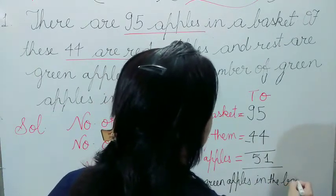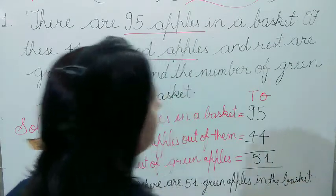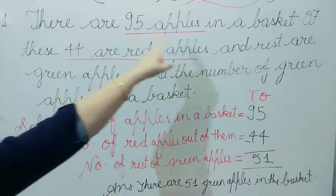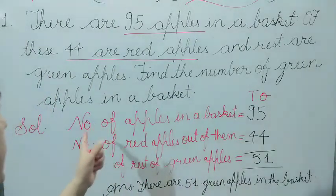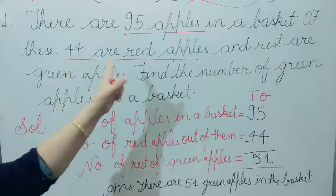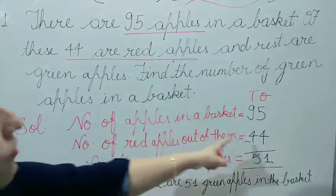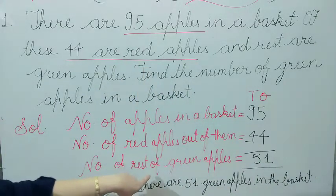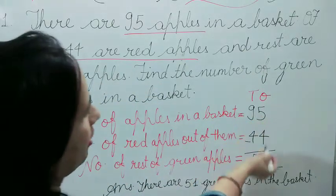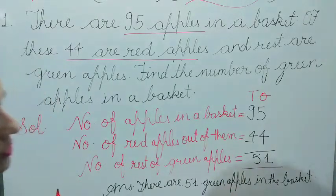So this is our answer and it is easy for you to understand how to solve it. Total 95 apples — we have written number of apples in the basket as 95, how many red apples are there — number of red apples out of them is 44, and number of rest of green apples — we subtract it, then we get the green apples amount.